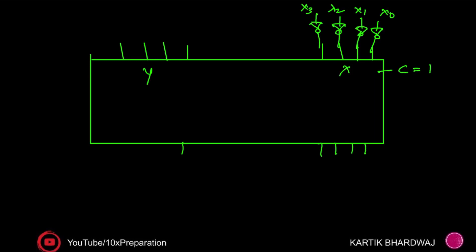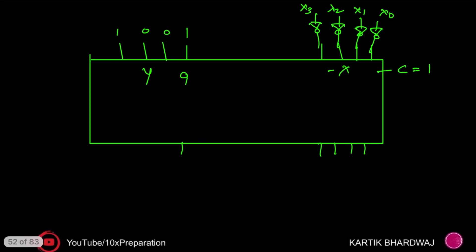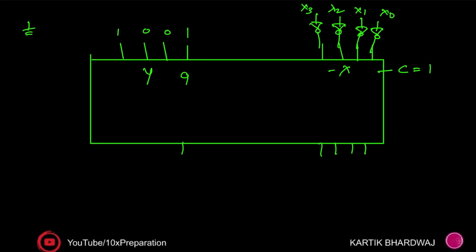So here: X3, X2, X1, X0 are the inputs. When carry-in C is 1, this produces minus X. For the value 9, I write it in binary as 1001 — where I use ground for 0 and VDD for 1. So the output at this port is simply 9 minus X, which is the 9's complement of the BCD number.